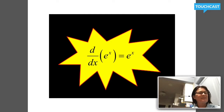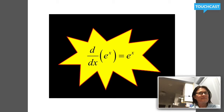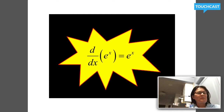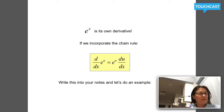The derivative of e to the x is e to the x. e to the x is the only function that is its own derivative. Well, y equals zero is its own derivative too, but it's the only interesting function that's its own derivative. So you're going to write that into your notes: the derivative of e to the x is e to the x.